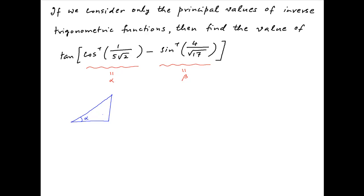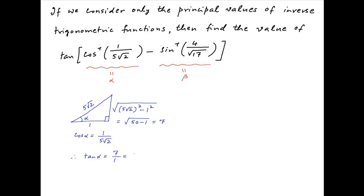Consider a right angle triangle where the angle between the base and the hypotenuse is alpha. Since cos alpha equals 1 upon 5 root 2, the base is 1 and the hypotenuse is 5 root 2. Using Pythagoras theorem, the perpendicular equals square root of (50 minus 1), which equals 7. Therefore tan alpha equals perpendicular upon base, which is 7, so alpha equals tan inverse 7.